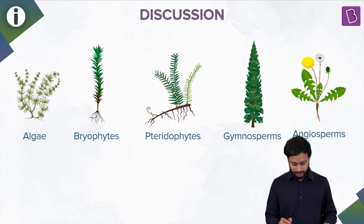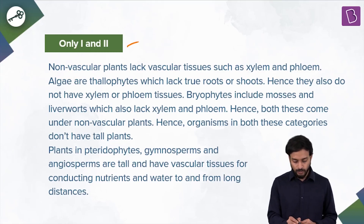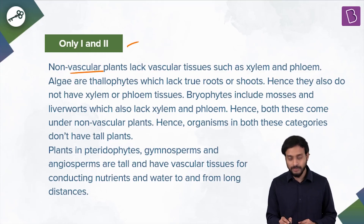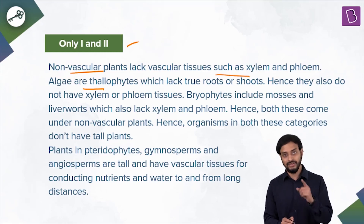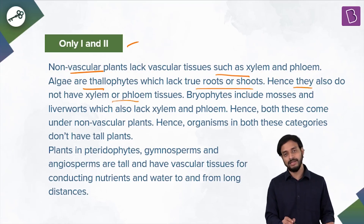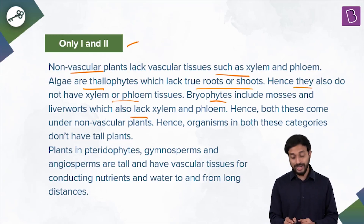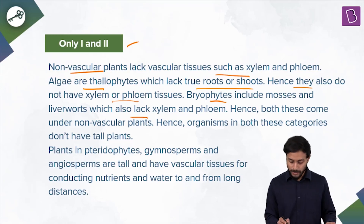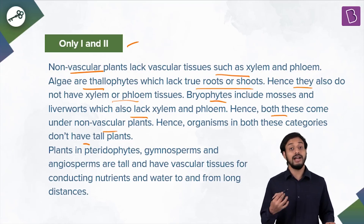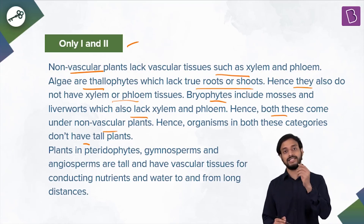Let's confirm — yes, algae, bryophytes, pteridophytes, gymnosperms, angiosperms is the sequence. Nonvascular plants lack vascular tissues — the xylem and phloem. Algae are thallophytes which lack true roots or true shoots, so they also do not have xylem or phloem. Bryophytes include mosses and liverworts, which also lack xylem and phloem. Both come under nonvascular plants, and organisms in these categories are not tall — water cannot transport at such heights without vascular tissues.